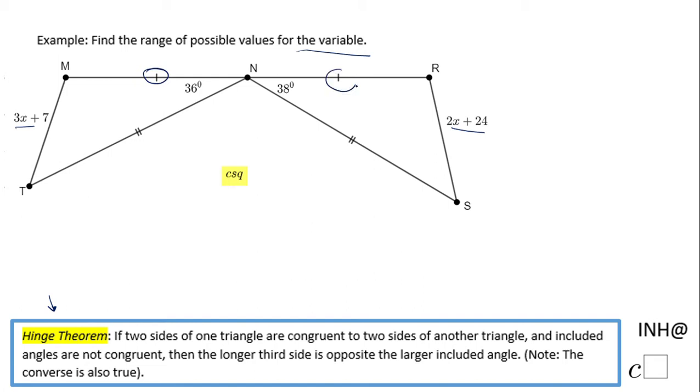We notice MN is congruent with NR. Also, we notice TN is congruent with NS.